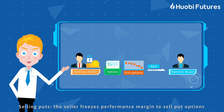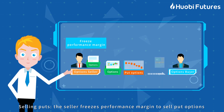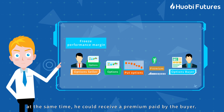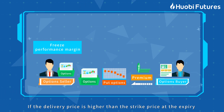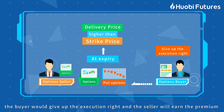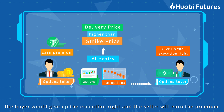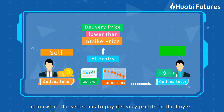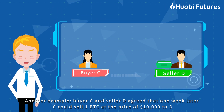Selling Puts: The seller posts performance margin to sell put options. At the same time, he could receive a premium paid by the buyer. If the delivery price is higher than the strike price at expiry, the buyer would give up the execution right and the seller will earn the premium. Otherwise, the seller has to pay delivery profits to the buyer.